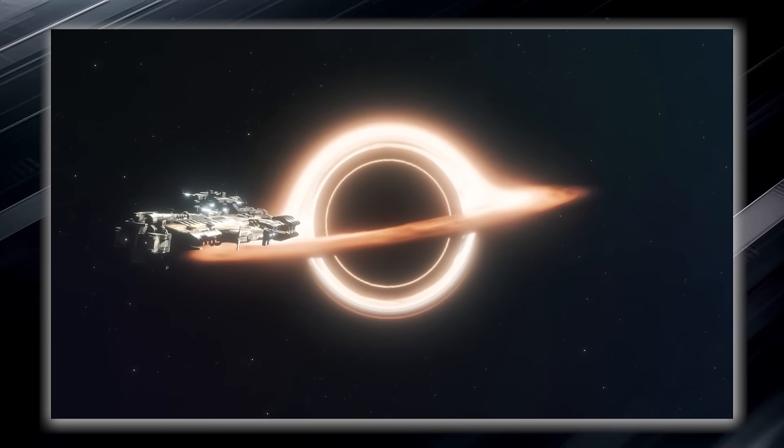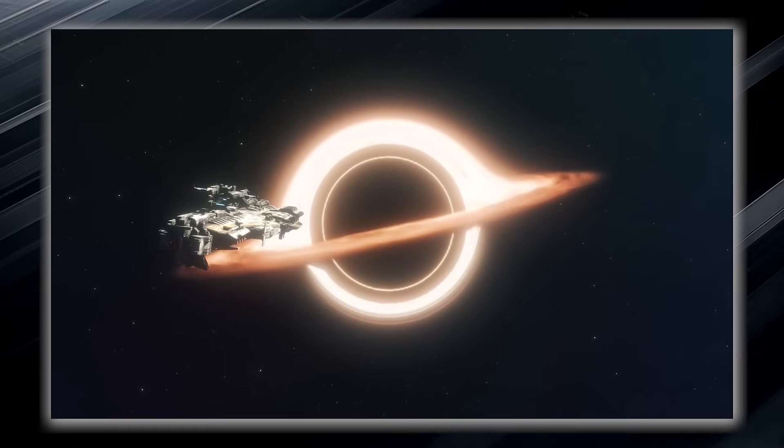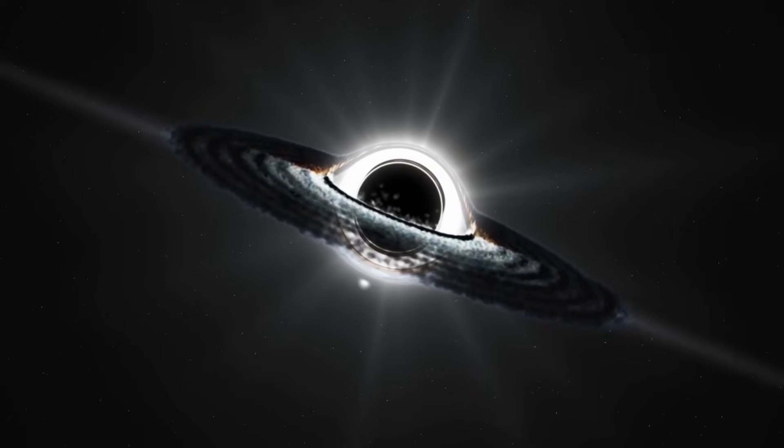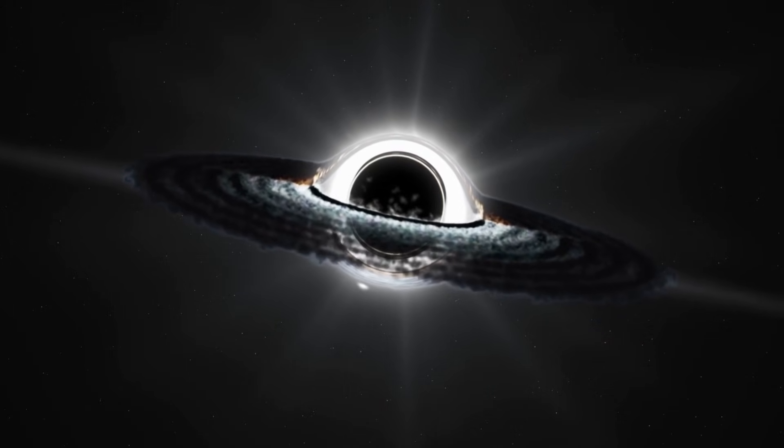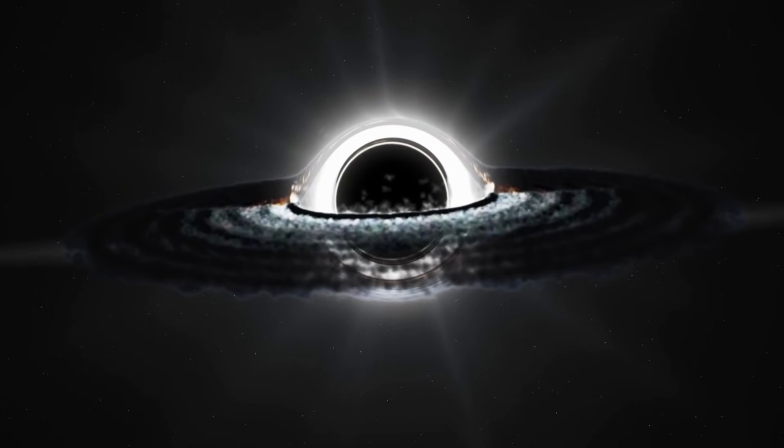Once something, such as an unfortunate spacecraft or even light, crosses its boundary, it can never escape the clutches of the black hole. The event horizon forms an invisible force field that holds everything within it, including light, which is normally considered the fastest entity in the universe.